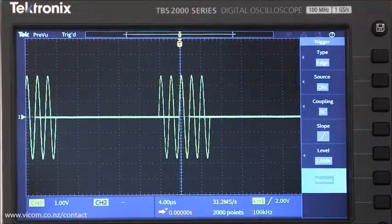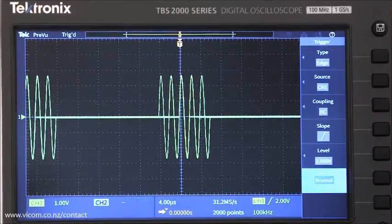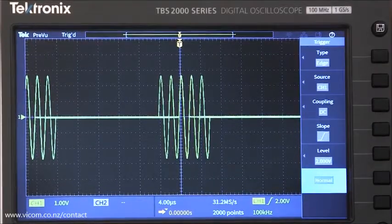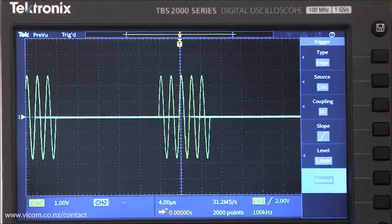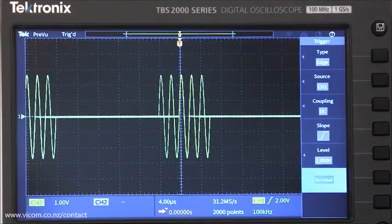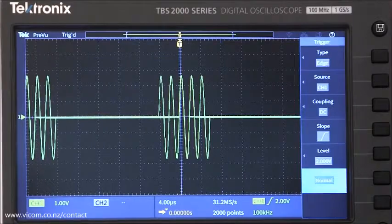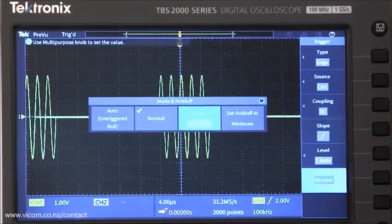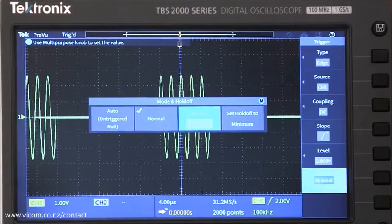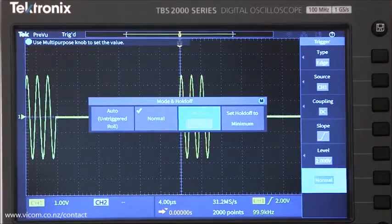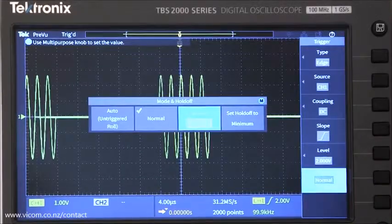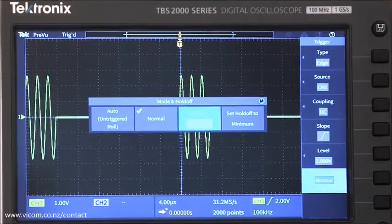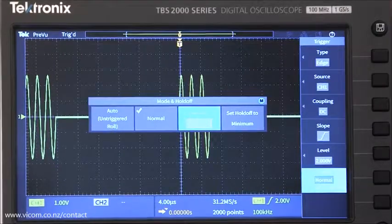This mode is useful if you're looking for specific conditions that don't occur very often. In some cases, the trigger conditions can be very close to each other on the timescale. To avoid multiple unwanted triggering, you can use the holdoff feature. We'll talk more about the holdoff feature in the next video.